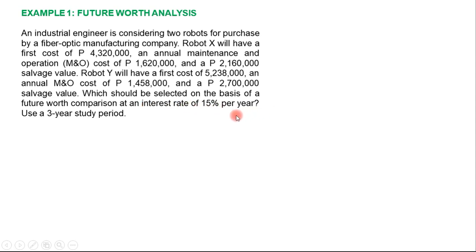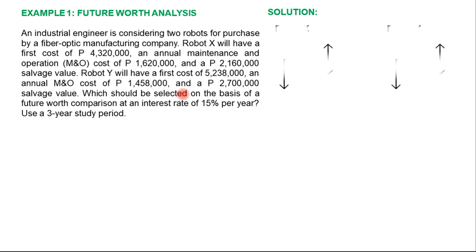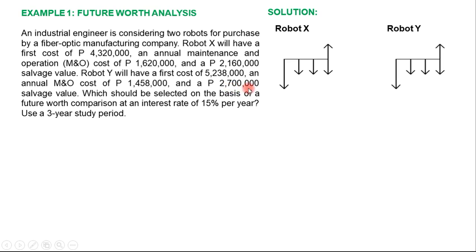The interest rate is 15% per year, using a three-year study period. Both alternatives have a common lifespan of three years. Let's draw the cash flow diagram for Robot X and Robot Y. At the initial year — year zero — the first cost (initial cost) of Robot X is 4 million, with the cash flow drawn downward to indicate it is an expense.